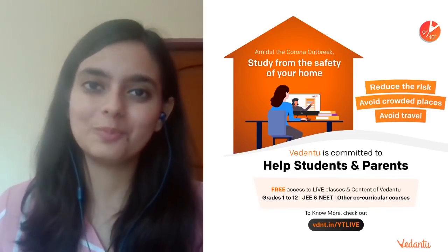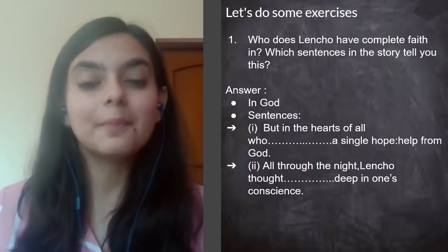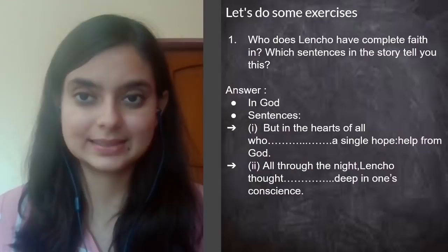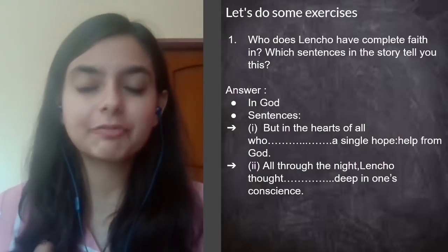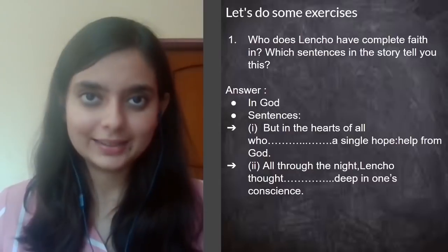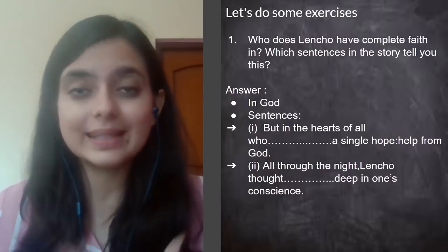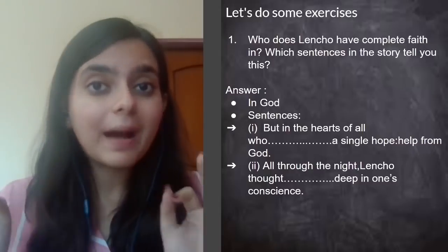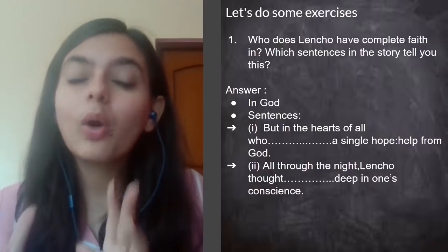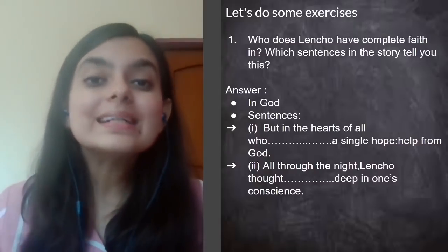The first question that can come is: who does Lencho have complete faith in, and which sentences in the story tell you this? To answer this question, you need to go back to your NCERT book and read 'A Letter to God' line by line. This is a very important step — please do not read only the summary and then go for the examination. Please read the chapter line by line and try to analyze every line. The answer is always in the textbook.